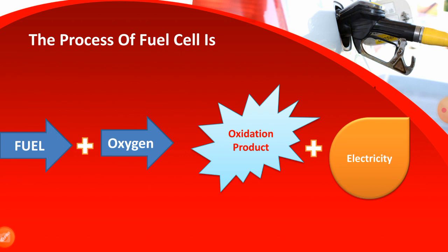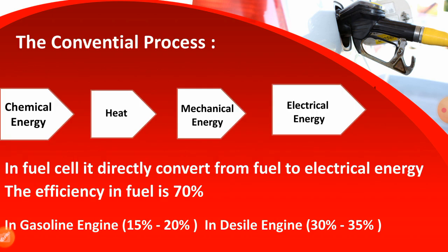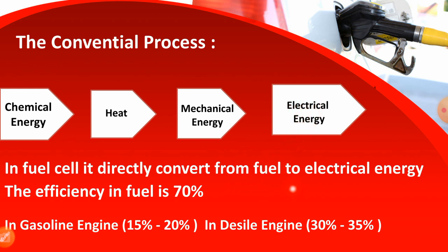In a fuel cell, fuel and oxygen combine to form oxidant products and electricity is produced. In a conventional process, chemical energy converts to heat, heat converts to mechanical energy, and then mechanical energy converts to electrical energy. In a fuel cell, it directly converts fuel to electrical energy with an efficiency of 70%, whereas a gasoline engine achieves 15 to 20% and a diesel engine 30 to 35%.